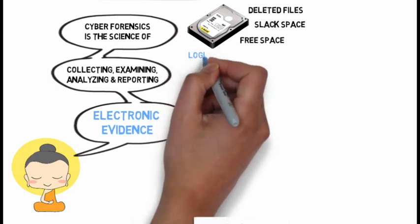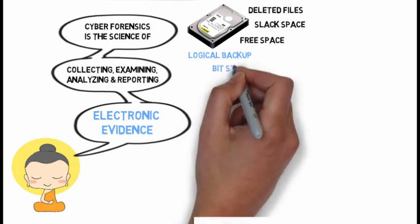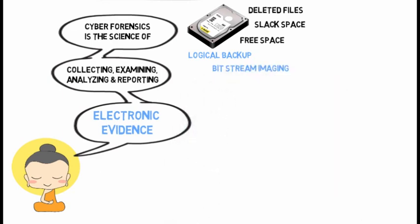How do we handle this kind of evidence? We could do a logical backup, which copies the directories and files of a logical volume but does not capture deleted files or residual data in slack space. A much better alternative is a bit stream image. Bit stream imaging generates a bit-for-bit copy of the original media including free space and slack space. Bit stream images require more storage space and take longer to perform than logical backups.